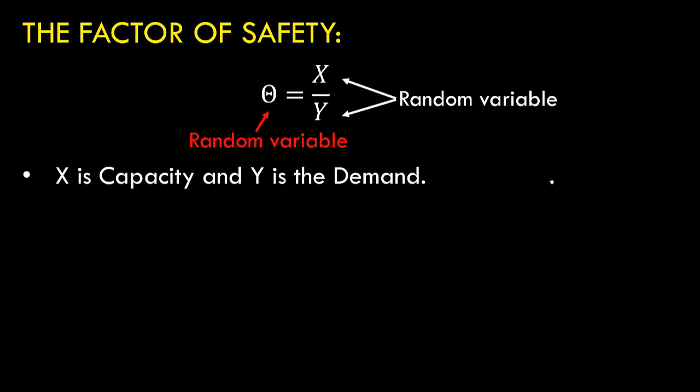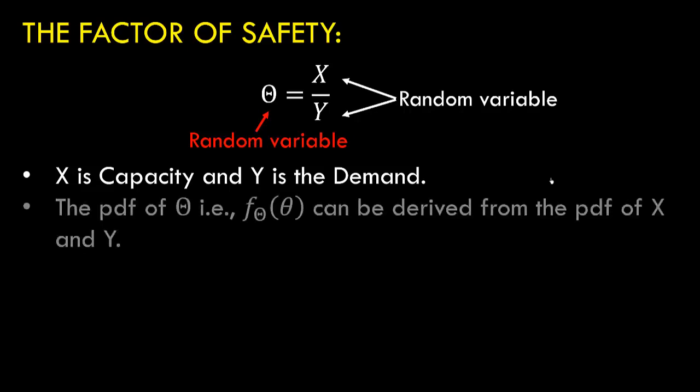In this equation X is the capacity and Y is the demand. We can find the PDF of theta. The PDF of theta, that is f_theta(theta), can be derived from the PDF of X and Y. In other words, if we know the PDF of demand and capacity, we can calculate the probability density function for factor of safety.